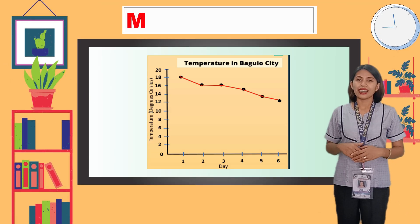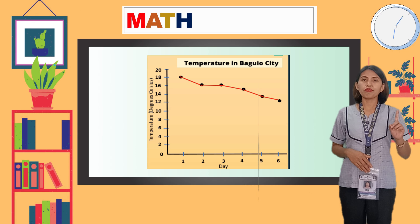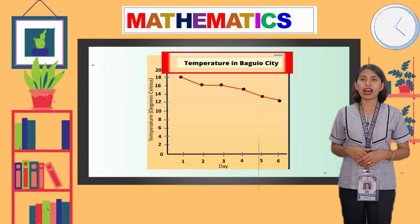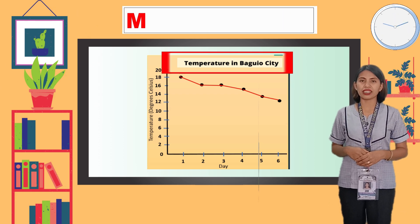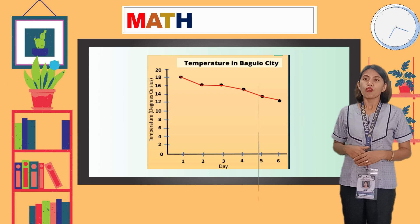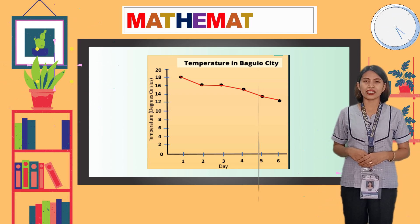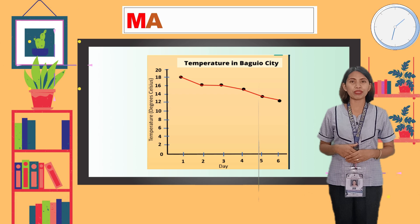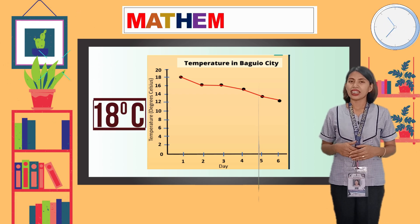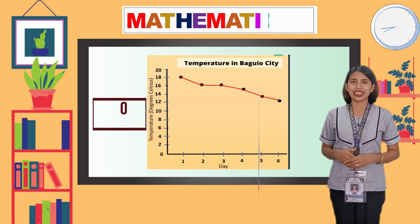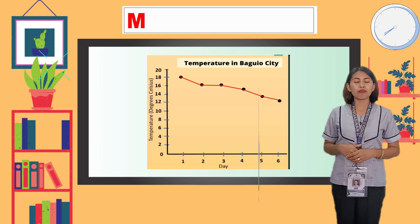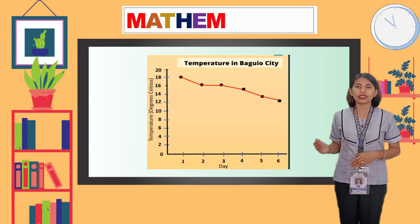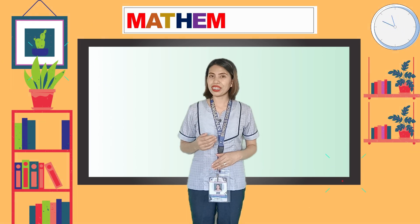Using the line graph, let us answer the following questions. The line graph is about the temperature in Baguio City. The lowest temperature recorded was 12 degrees Celsius. The highest temperature recorded was 18 degrees Celsius. Based on the graph, the temperature decreased over time. Great job, magagaling students!